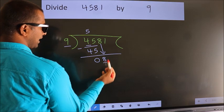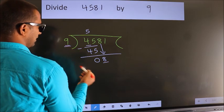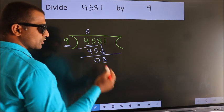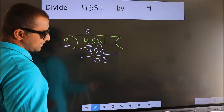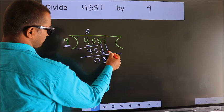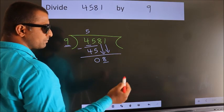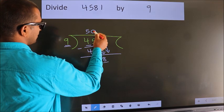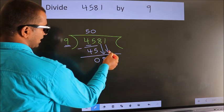Here we have 8. Here 9. 8 smaller than 9. So we should bring down the second number. And the rule to bring down second number is, put 0 here. Then only we can bring down this number.